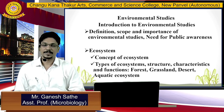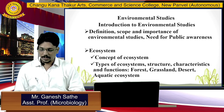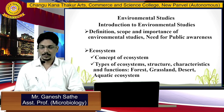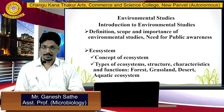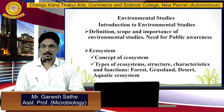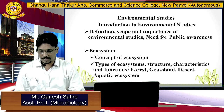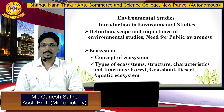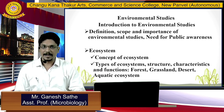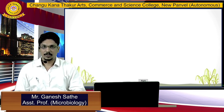I will also discuss ecosystem — what is the definition of ecosystem, what are the different types of ecosystems found around us, their structures, their characters and functions. In this I will cover four ecosystems: forest ecosystem, grassland ecosystem, desert ecosystem, and aquatic ecosystem.